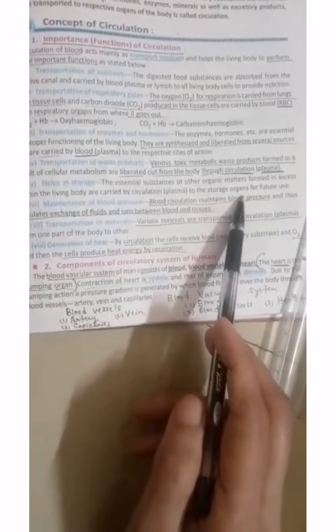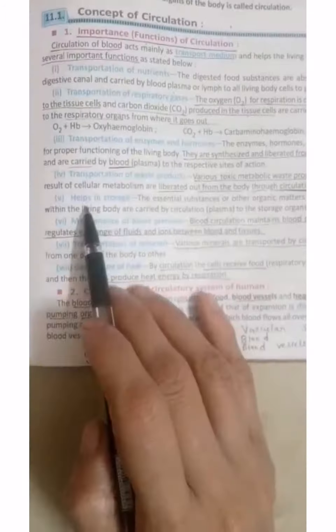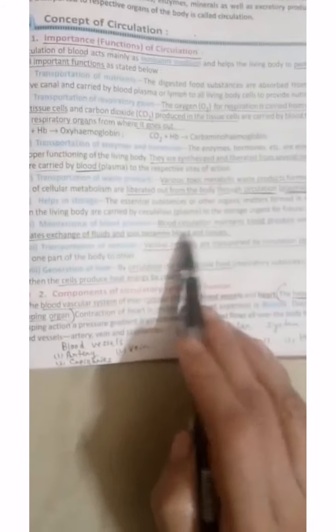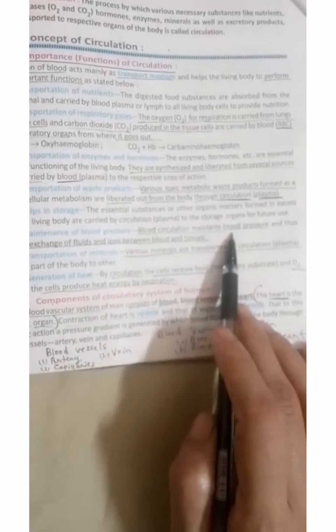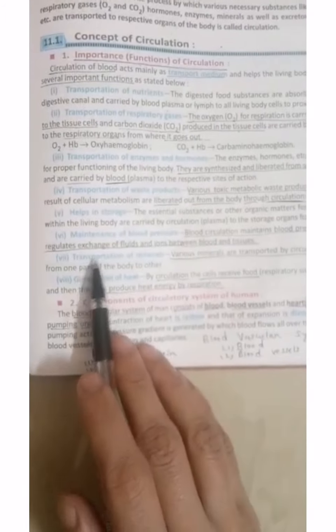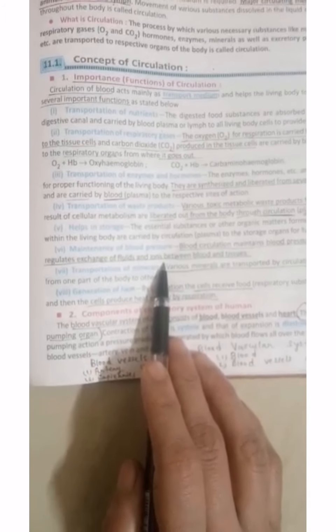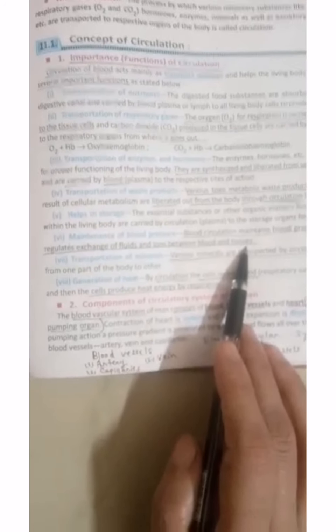Next is maintenance of blood pressure. Blood circulation maintains blood pressure and thus it will regulate exchange of fluids and ions between blood and tissues.